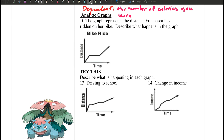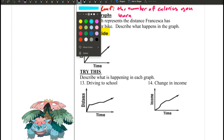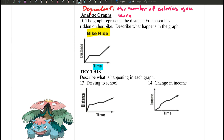Problem ten: analyze the graph. They give you a graph and ask you to interpret what it means. The graph represents the distance Francesca has ridden on her bike. Describe what happens in the graph. This graph is about Francesca riding a bike, and there are two components to pay attention to: time and distance.